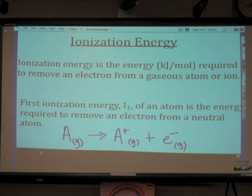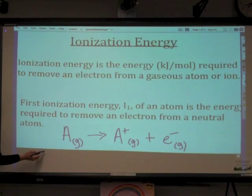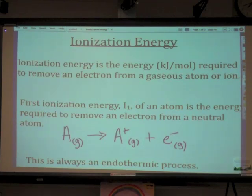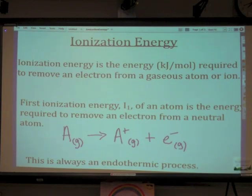Endothermic or exothermic? Do you think energy is released in removing this electron, or does it take energy to remove that electron? It's endothermic — it requires energy. The kilojoules per mole of ionization energy is always a positive value, so it's always an endothermic process, which makes sense. To pull an electron away from the pull of the nucleus is certainly going to take an input of energy.